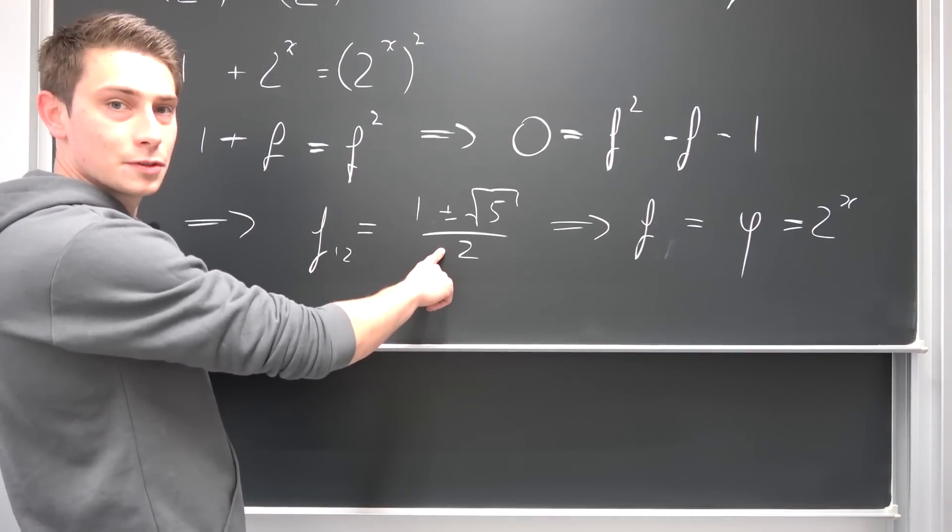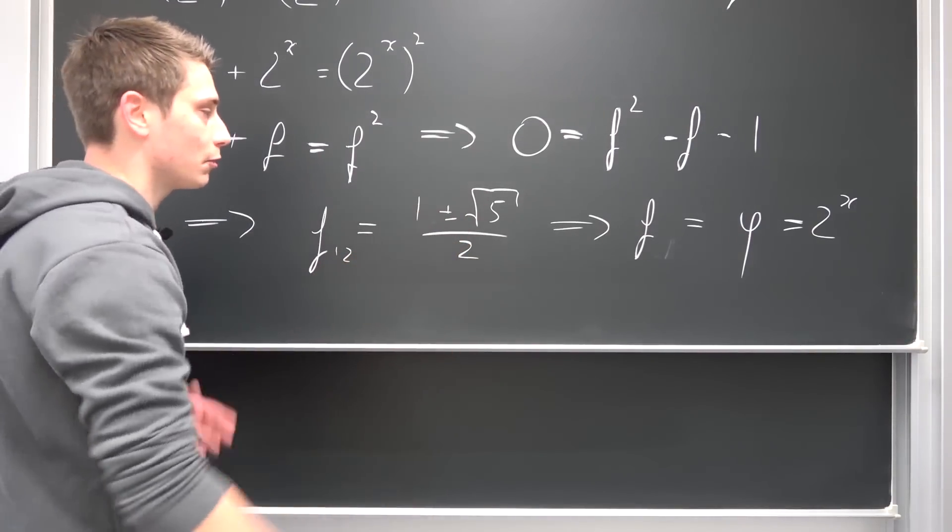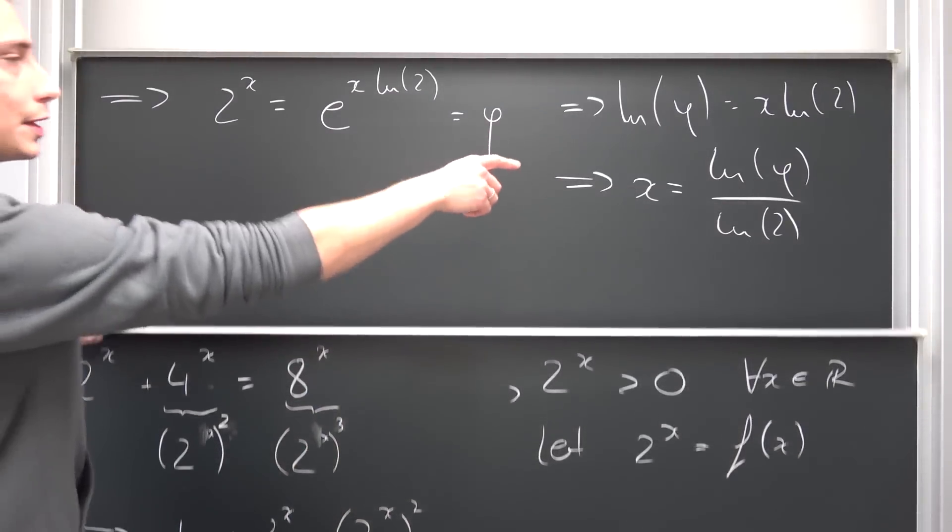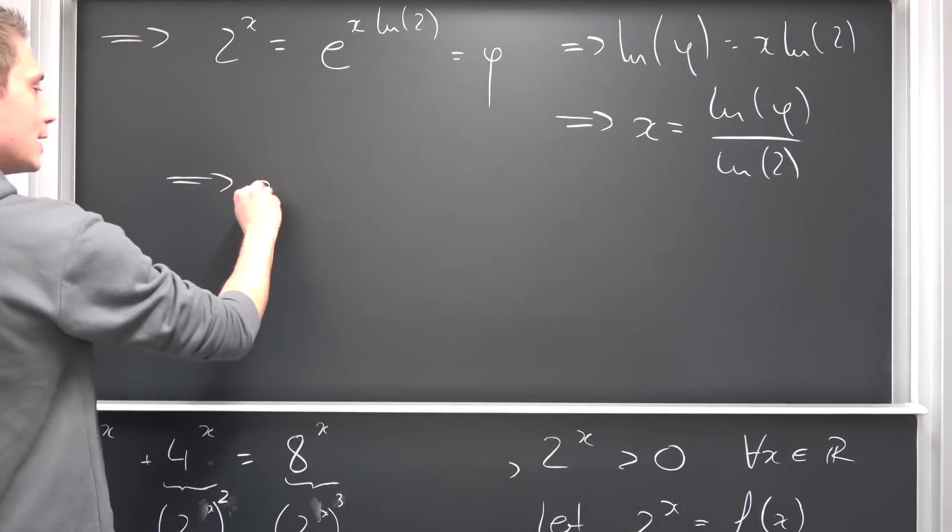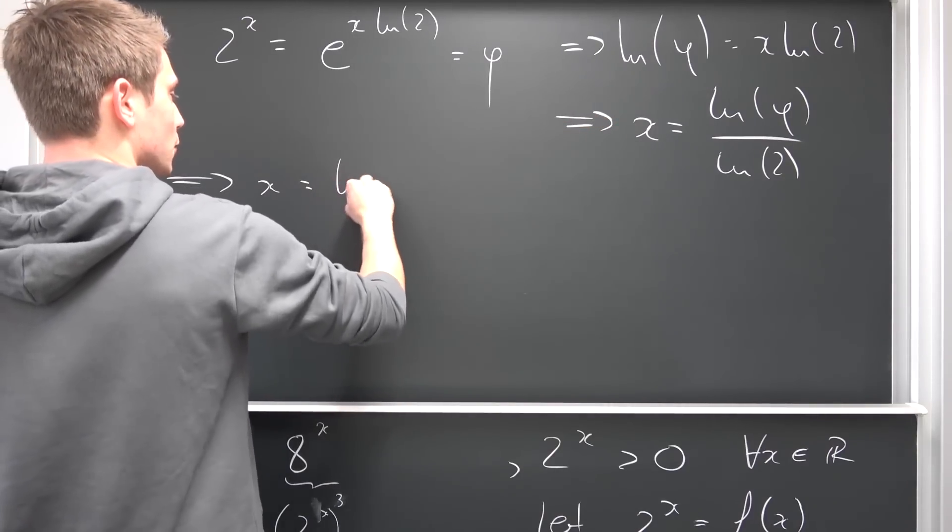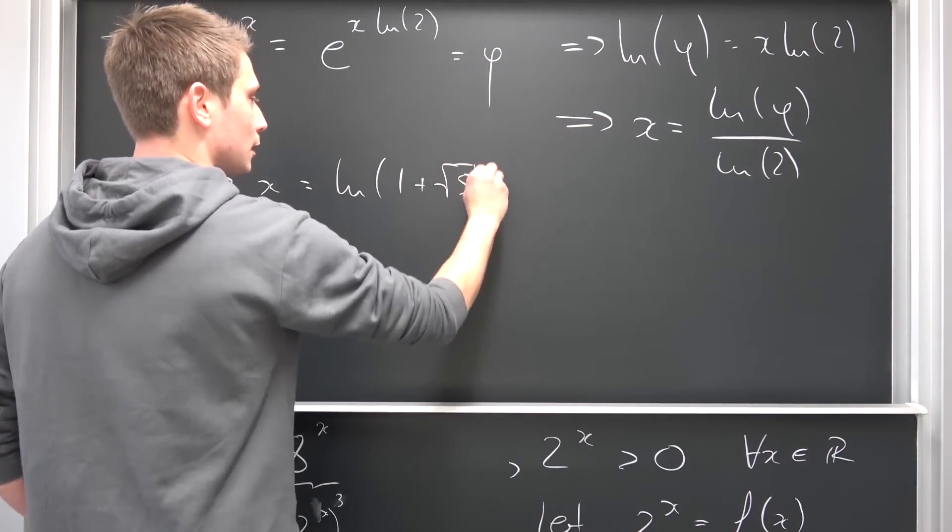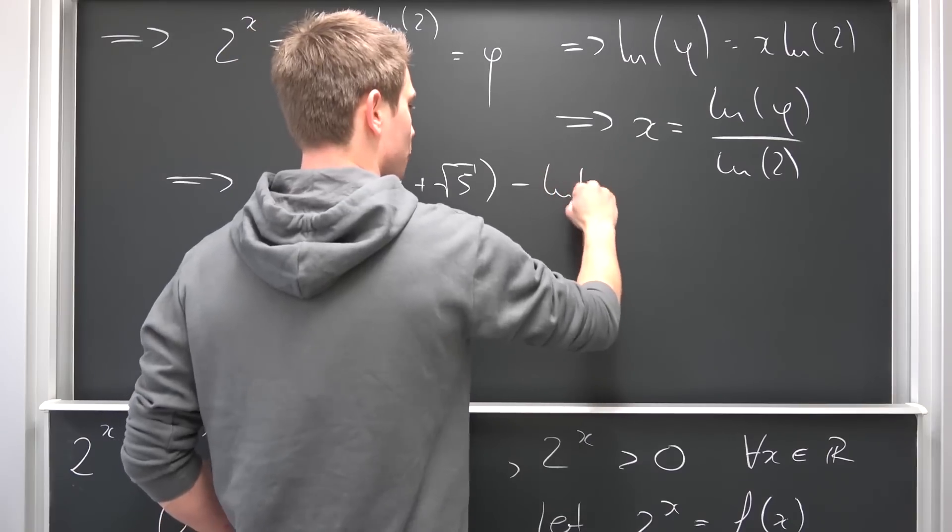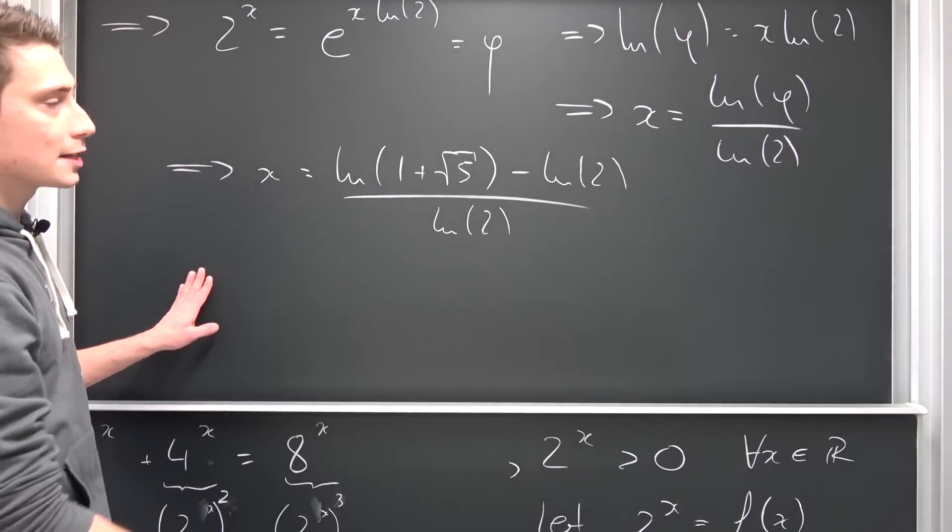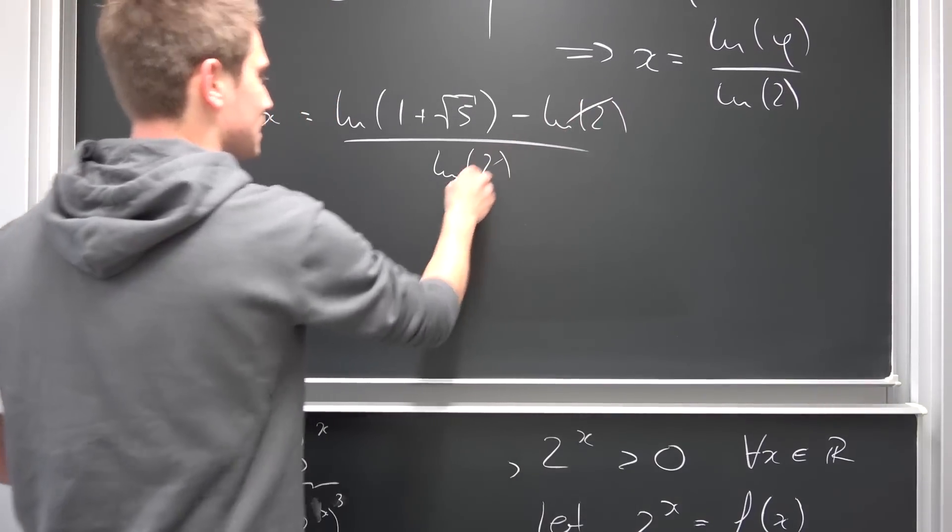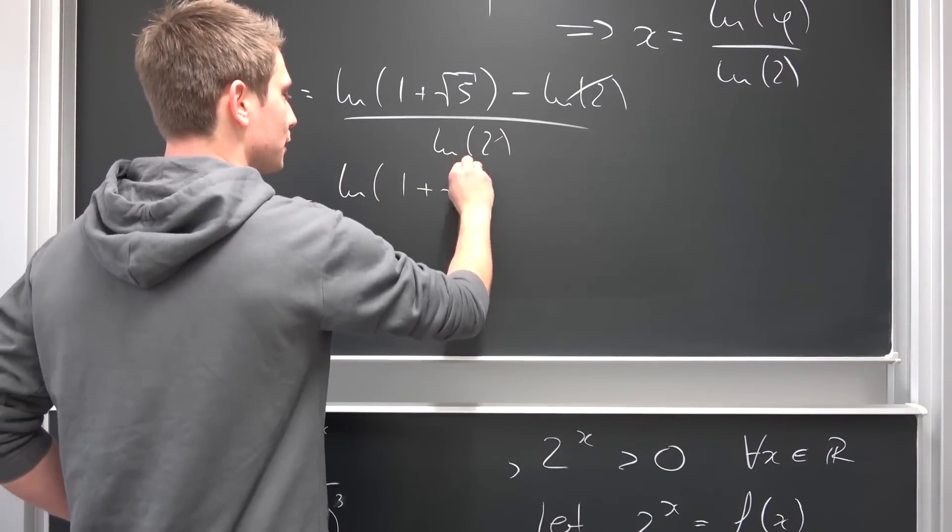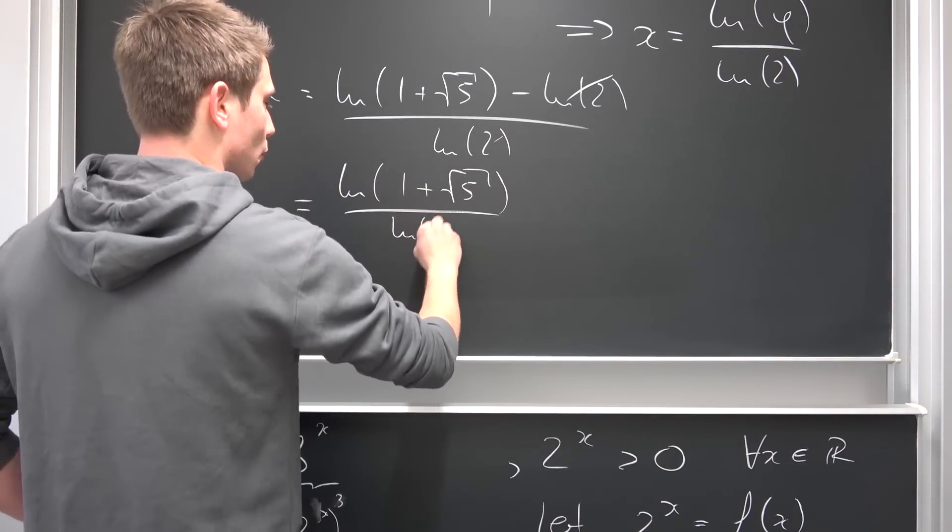This is actually quite an interesting result because our natural log of phi, so x is this, natural log of phi is nothing other than the natural log of 1 plus square root of 5 minus the natural log of 2 over the natural log of 2 overall. And some stuff is going to cancel out. We are going to get this and that, and this is going to be left: natural log of 1 plus the square root of 5 over the natural log of 2 minus 1.